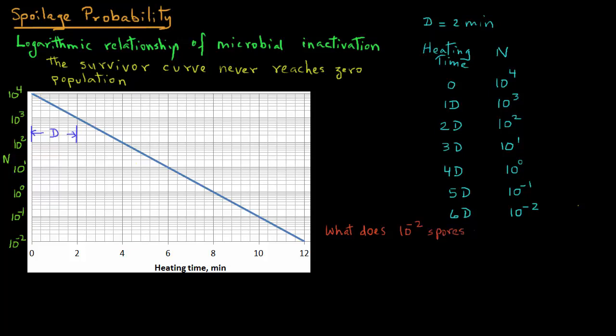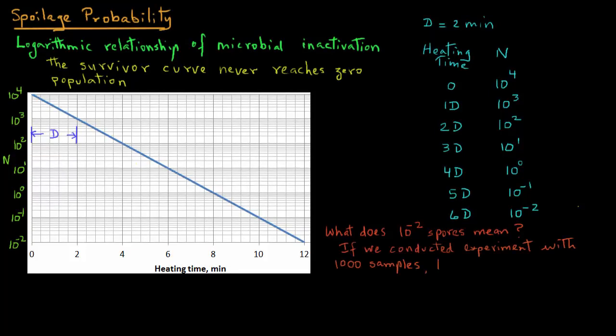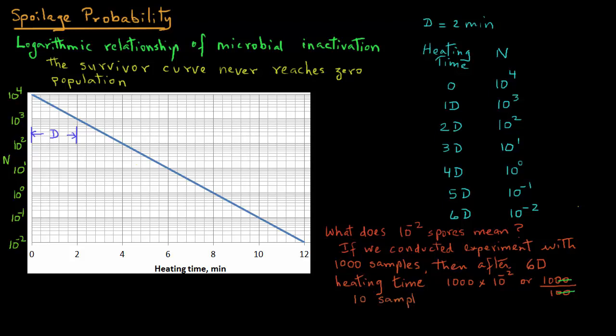What that means is that if we conducted an experiment, let's say with 1000 samples, then after 6d time, heating time, the population will be 1,000 times 10 raised to power minus 2, or 1,000 divided by 100, that gives us 10. So 10 samples will have a surviving spore out of the 1,000 samples.